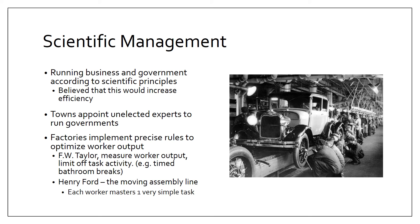Henry Ford applied scientific management through the moving assembly line. Ford realized you could make a car much faster by moving the car to the worker instead of moving workers to the car. Cars were put on a moving line and each worker performed one very simple task over and over. If you worked for Ford, you didn't actually build a whole car — you screwed in one screw or put on one tire. This made work very boring for individual workers, but it enabled Ford to produce millions of cars.